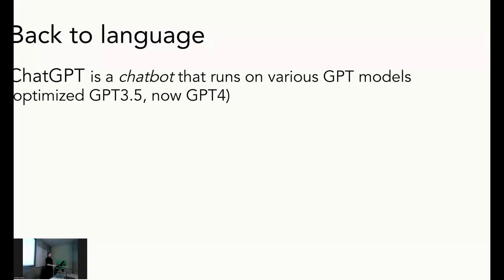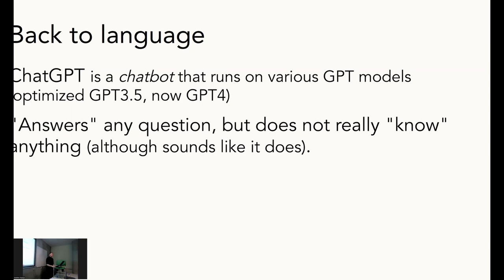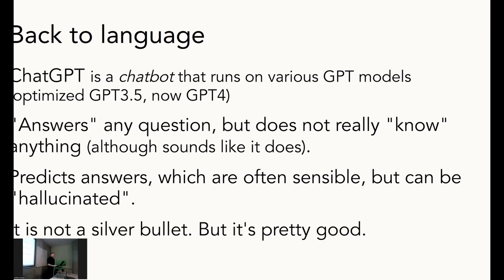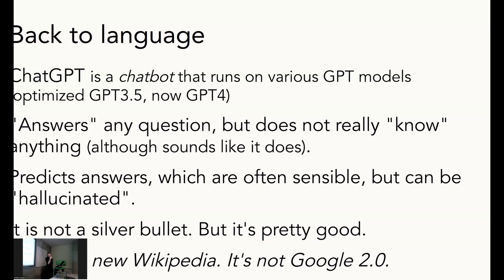Back to language. ChatGPT is what we call a chatbot. It runs on various GPT models — it used to be 3.5, and now the fourth generation. It kind of answers any question, but it doesn't really know anything in a traditional sense — it's a bit weird. It definitely sounds like it knows something because it's been explicitly trained to sound authoritative. What it does is predict likely answers to possible questions. But it can hallucinate — that is also a technical term now. If it doesn't have a likely output, it just makes something up. It's not a silver bullet, but it is brilliant. It's definitely not Wikipedia — it's not a knowledge base, although some models have been marketed as such.